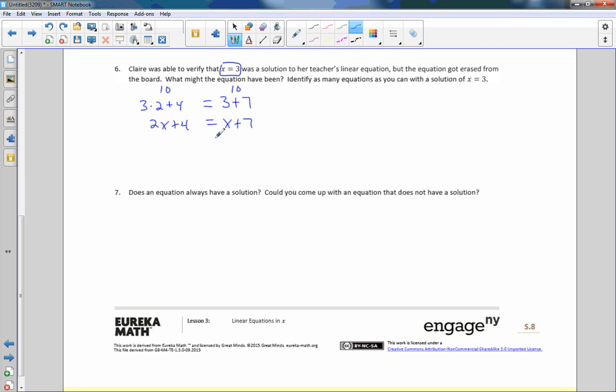When I plug in 3, it is true. 3 times 2 is 6. 6 plus 4 is 10. 3 plus 7 is 10. So, there's one example right here. 2x plus 4 equals x plus 7. That is true when x is 3. There are infinitely many solutions to this. Play around with that a little bit. Check your answers. Best way to do it is work backwards. Start with a total on both sides and see how much stuff you can manipulate inside by dividing, multiplying, adding, and subtracting.